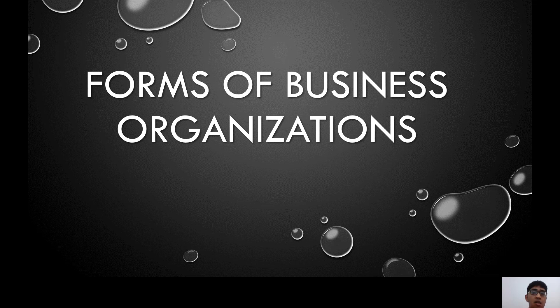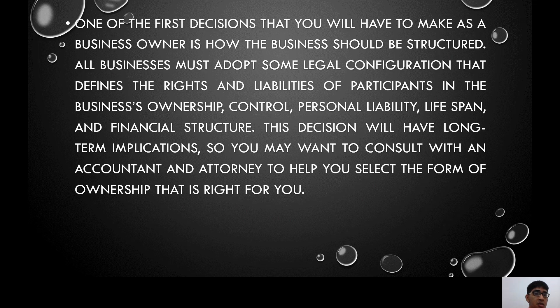We will go now to our lesson on forms of business organizations. We are dissecting business into three major classifications. One of the first decisions you will have to make as a business owner is how the business should be structured. All businesses must adopt some legal configuration that defines the rights and liabilities of participants in the business — ownership, control, personal liability, lifespan, and financial structure. You may want to consult with an accountant and attorney to help you select the form of ownership that is right for you.